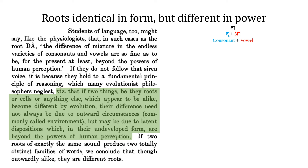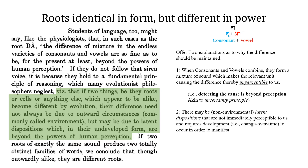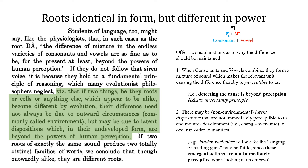Mueller is offering two explanations as to why difference should be maintained. The first is that when consonants and vowels are combined, they form a mixture of sound which makes the relevant unit causing their difference imperceptible to us — akin to something like the uncertainty principle. The second reason is that there may be non-environmental latent dispositions not immediately perceptible to us that require development or change over time in order to manifest — akin to a hidden variables hypothesis, where to look for a singing or reading gene may be futile, since these are emergent actions not immediately perceptive when looking at an embryo or an earlier developmental stage.